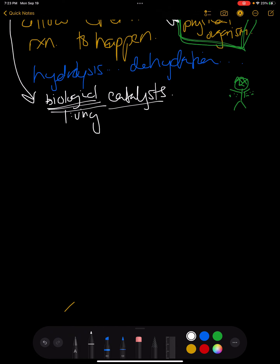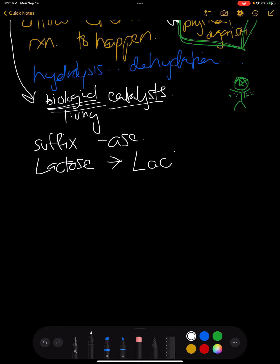A couple of housekeeping points on enzymes. First, they always end in the suffix "-ase." Usually the name is what the enzyme is breaking down. For example, take lactose — we know lactose is the sugar found in milk. The enzyme that breaks apart lactose is called lactase. We know lactose is a sugar because it ends in "-ose," and we know lactase is an enzyme because it ends in "-ase."